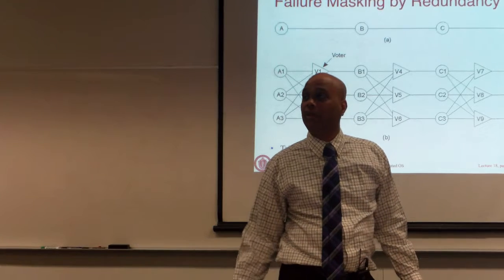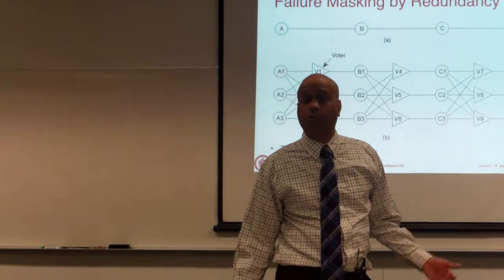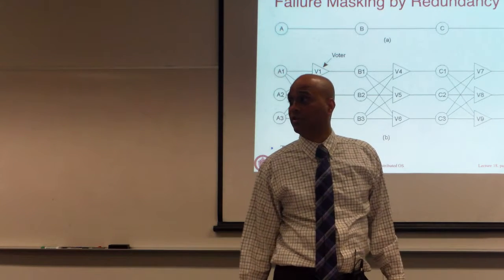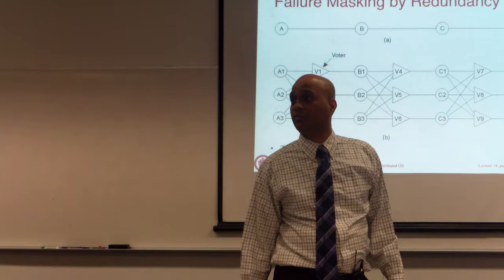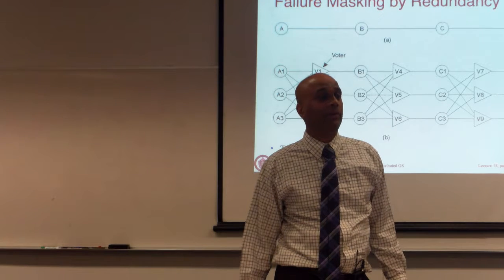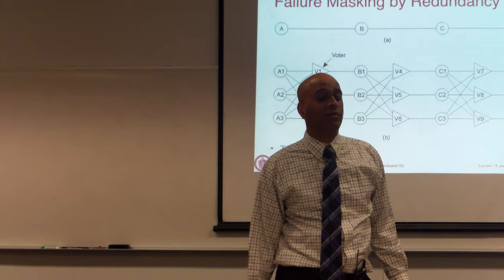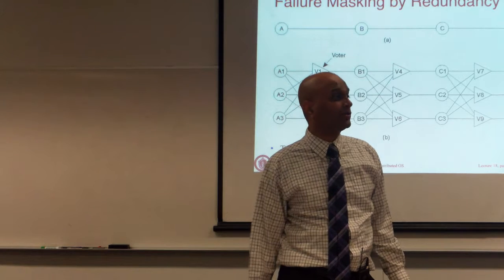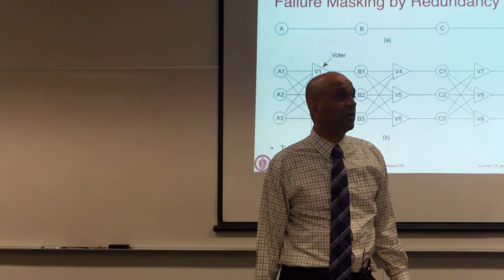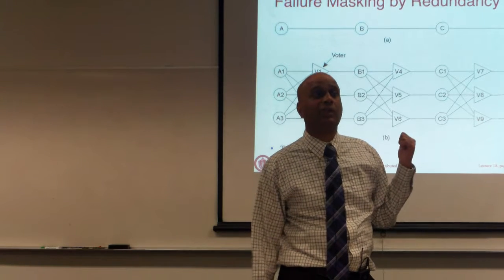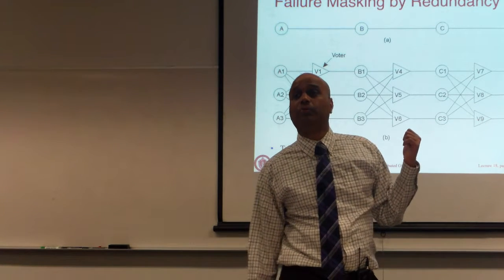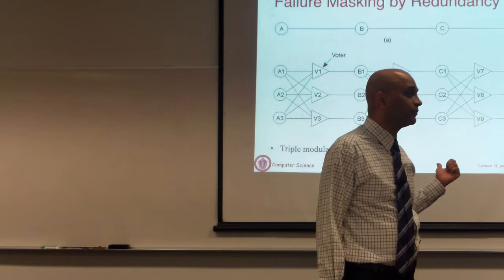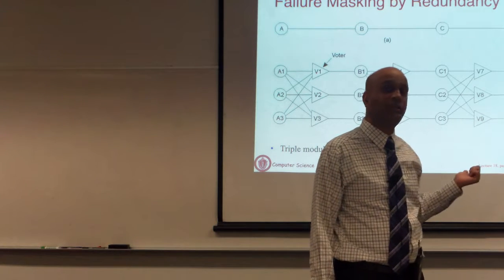We will talk about K-fault-tolerant systems where the system can survive K faults in each stage and yet function. For crash fault tolerant systems it is straightforward because if the server is up it is doing the right thing. For Byzantine faults, if you want K fault tolerance you need at least four times the servers. There are two ends of the spectrum: crash fault tolerance is simple, Byzantine fault tolerance is very hard.